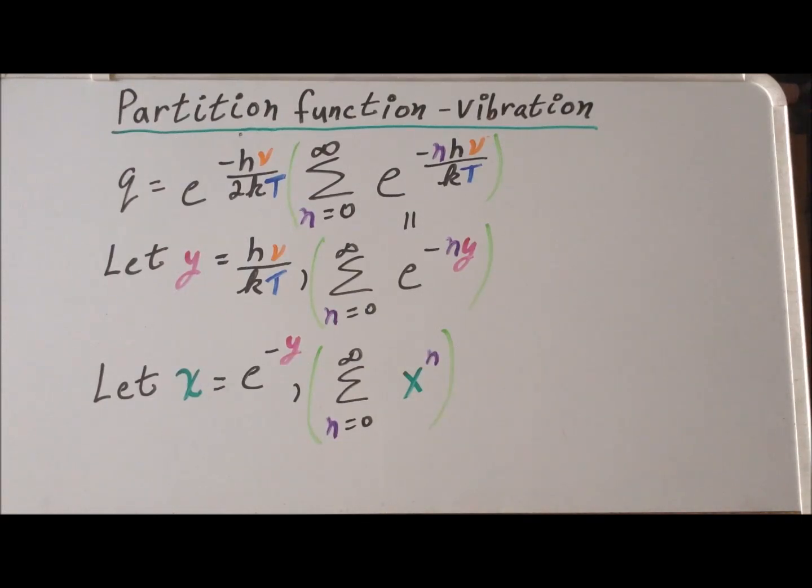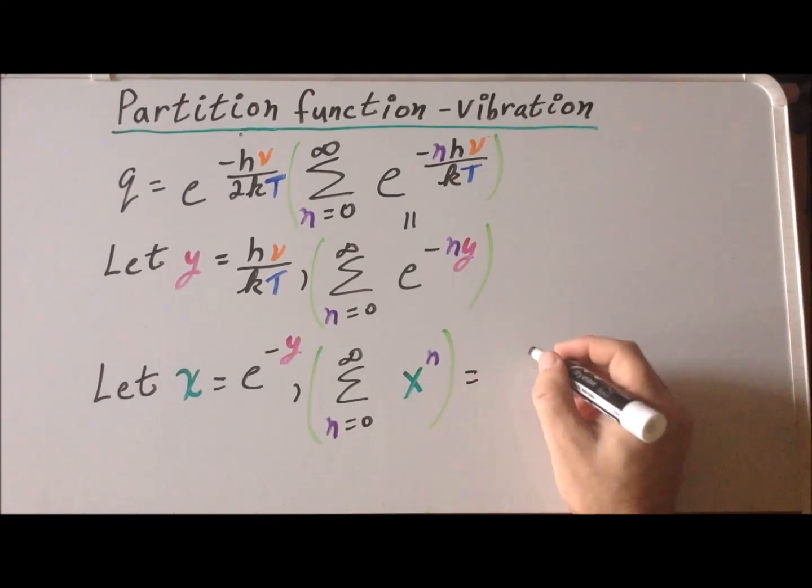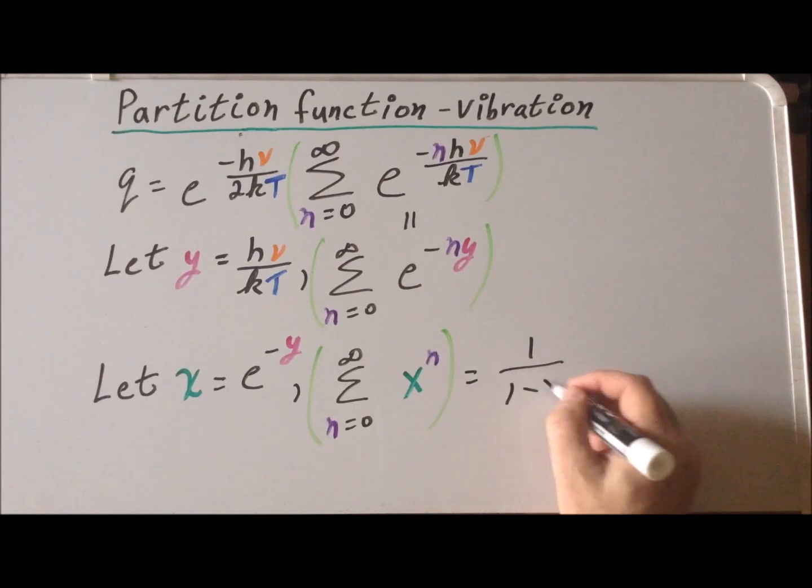And this is quite useful because this is a power series that is known to converge when the absolute value of x is less than 1. So this is a power series that converges and it converges to the sum 1 over 1 minus x.